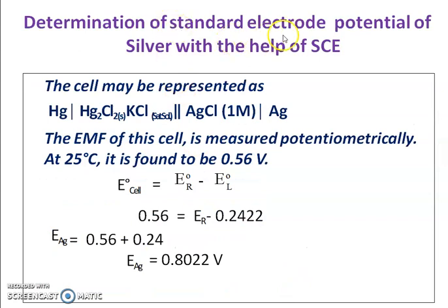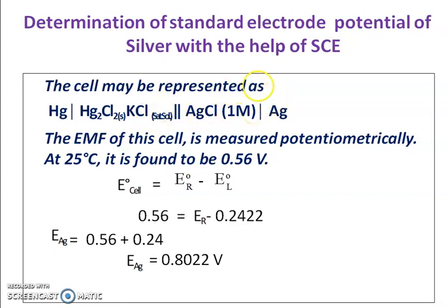Now let us determine the standard electrode potential of silver using the SCE as an example. We make a cell arrangement as represented here. The double line indicates the salt bridge; to the right of the salt bridge is the cathode and to the left is the anode. The anode is the Standard Calomel Electrode, connected to the silver electrode — silver metal dipped in silver nitrate solution at a concentration of one molar. The EMF of this cell is measured potentiometrically and at 25 degrees centigrade it is found to be 0.56 volts.